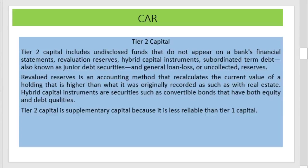Tier 2 capital includes undisclosed funds that do not appear on the bank's financial statements, revaluation reserves, hybrid capital instruments, subordinated term debt (also known as junior debt securities), and general loan loss or uncollected reserves. Revaluation reserves is an accounting method that recalculates the current value of a holding that is higher than what it was originally recorded as, such as with real estate. Hybrid capital instruments are securities such as convertible bonds.